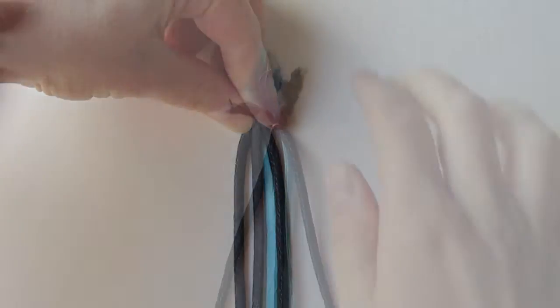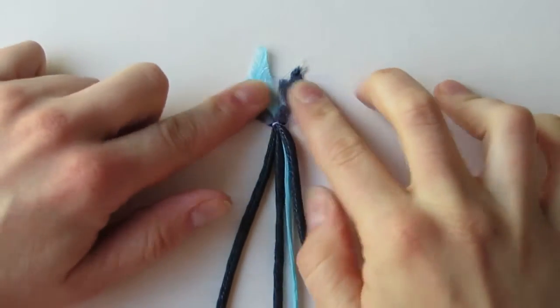Anchor your braid by taping the top ends securely to your work surface. Then take the leftmost strand, pass it over the next strand and under the accent strand.